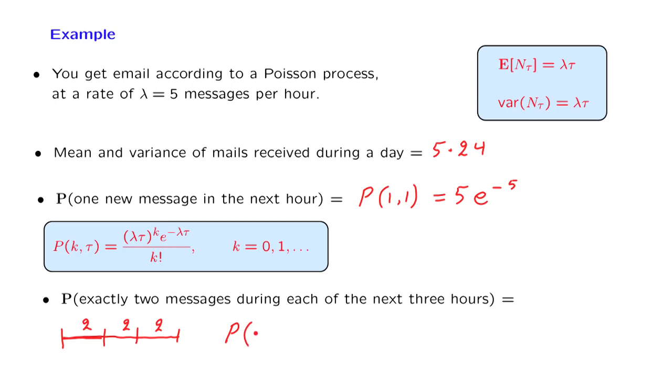which is, in our notation, this quantity, probability, and multiplied with itself three times. So we get the third power of this.